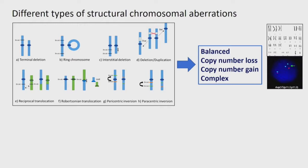From a clinical point of view, what is interesting to us is: is this a balanced rearrangement? Is this a person with a balanced translocation who's at risk of having imbalances in their gametes? Is there copy number loss or gain of important disease genes? Is this a complex rearrangement with multiple pieces involved? Can we really get the full picture from the analysis we have made?